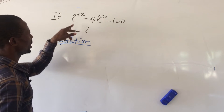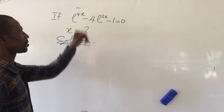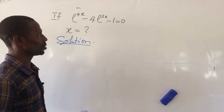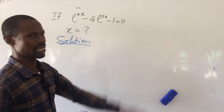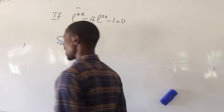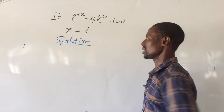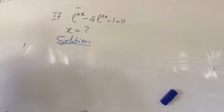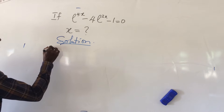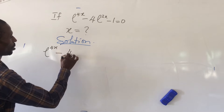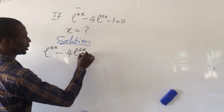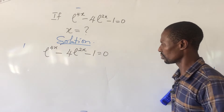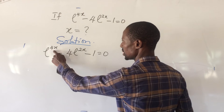We take our selection from here. The question says: if e to the power of 4x minus 4 times e to the power of 2x minus 1 equals zero, what is the value of x that will satisfy this equation? So let's write down our expression: e to the power of 4x minus 4 e to the power of 2x minus 1, all equal to zero.